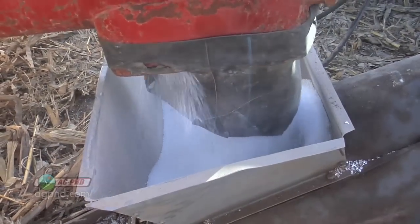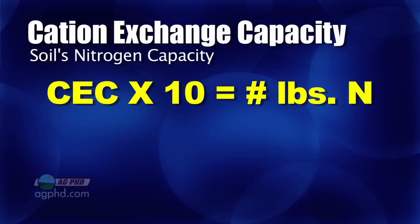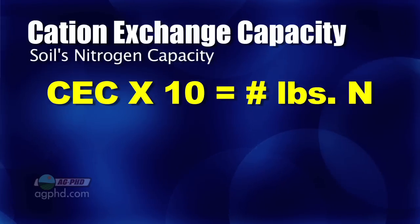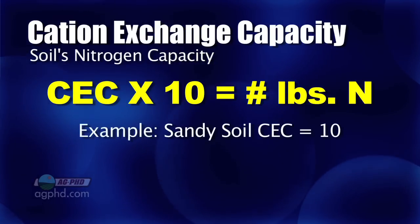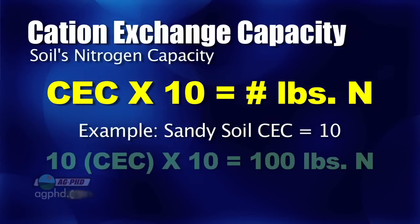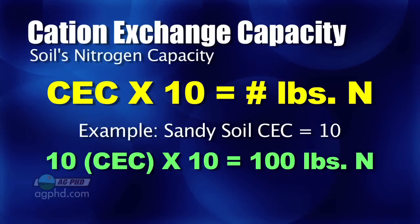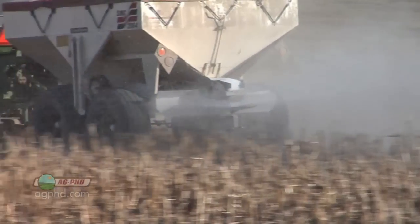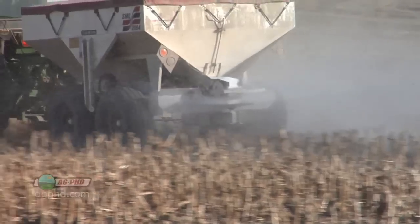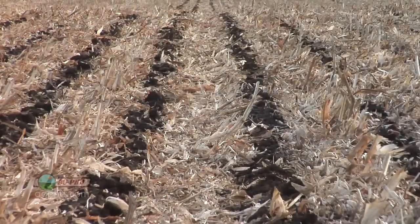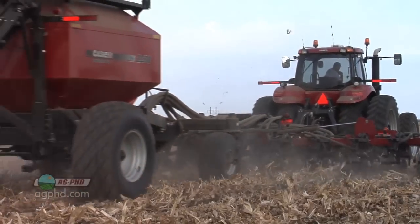For nitrogen, take 10 times your cation exchange capacity number and that'll tell you roughly how much nitrogen your soil can hold at any one point. In these sandy areas, our cation exchange capacity is around 10, so we can put on 100 pounds of nitrogen safely. The rest of the field is going to need 200 pounds of nitrogen — should I put 200 pounds in the bad areas? Absolutely not. With variable rate fertilizer, I can do that and save money while being good for the environment.